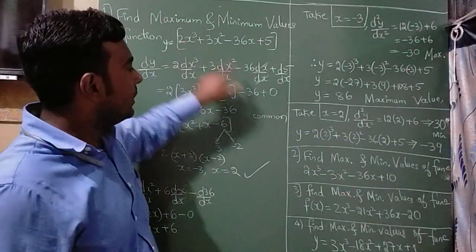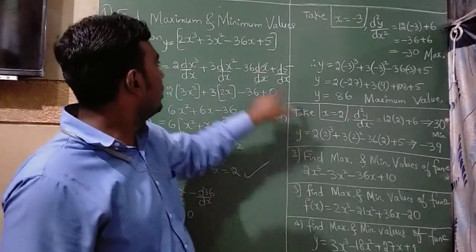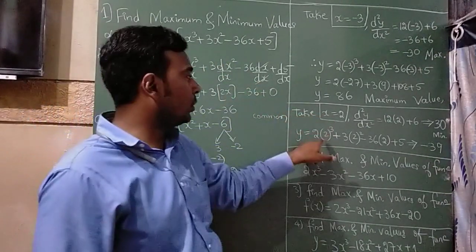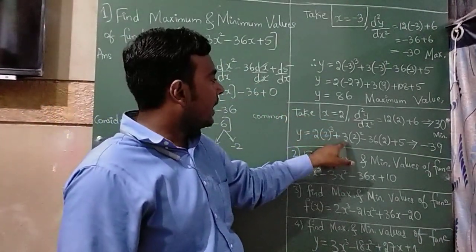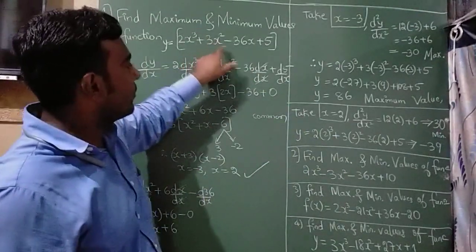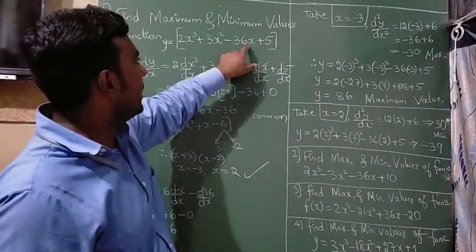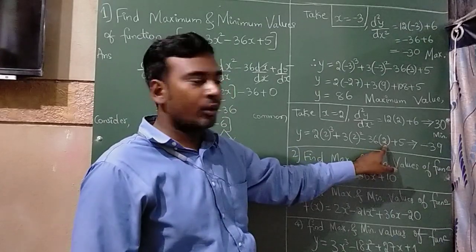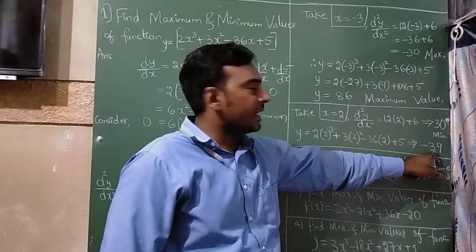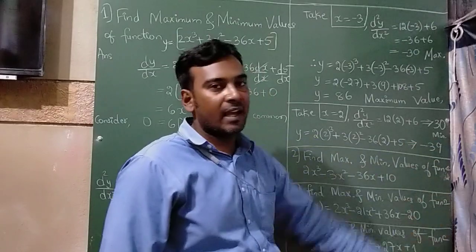Now in the given question, y = 2... in place of x, substitute 2. So 2 cubed is 8 and 3 here, in place of x, substitute 2, in place of x, substitute 2. If you calculate this, you will get -39. So this is your minimum value.